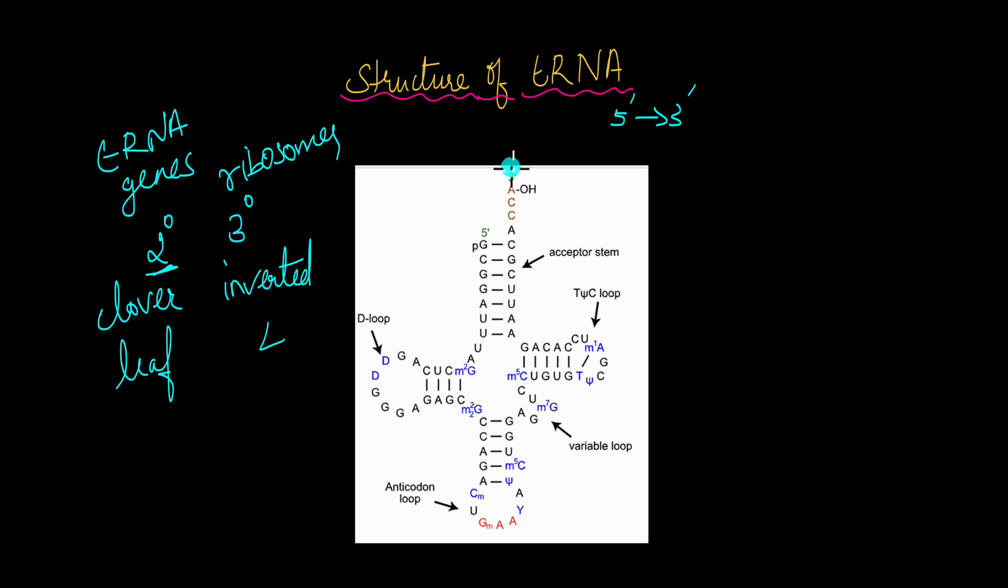First, let's start with the 3' end. So the 3' end of the tRNA has a sequence known as the CCA tail. It has a free hydroxyl group. This sequence is very important. With this hydroxyl group, it is very important. We will take a look at it in just a while.